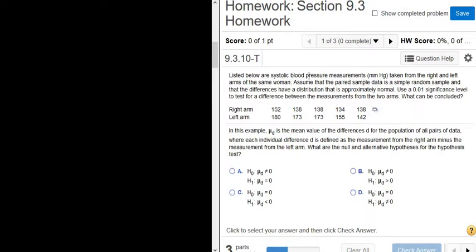It says listed below are systolic blood pressure measurements taken from the right and left arms of the same woman. Assume that the paired sample data is a simple random sample and that the differences have a distribution that is approximately normal. Use a .01 significance level, so alpha is .01, to test for a difference between the measurements from the two arms. So this is our first example of what's called paired data.